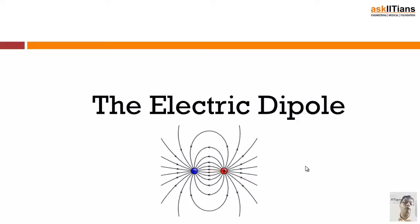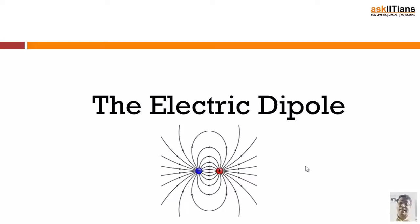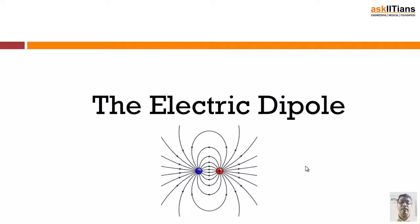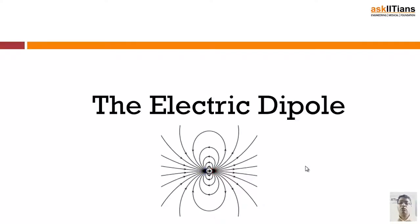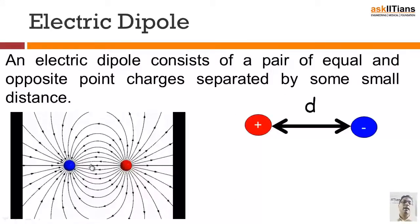But in the case of an electric dipole, you can have a standalone positive charge and a standalone negative charge. So that is the basic difference between an electric dipole and a magnetic dipole.